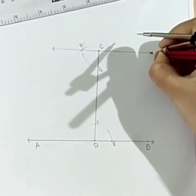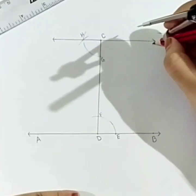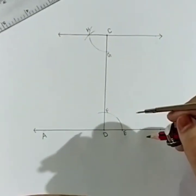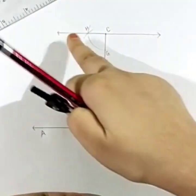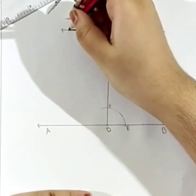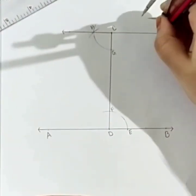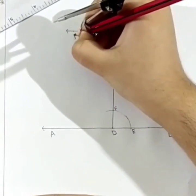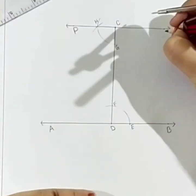Now, we get a line which is parallel to AB. Now, we will name this line. So, this is P and this is Q.